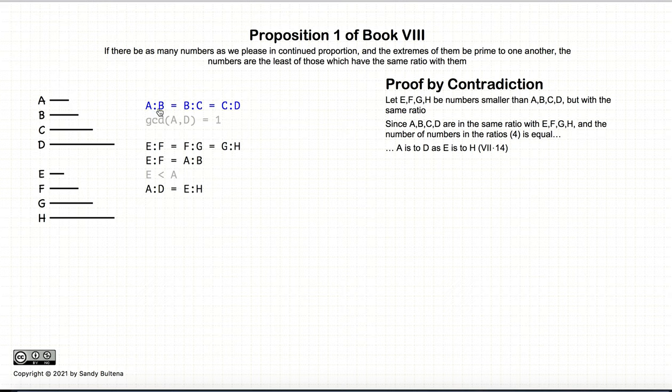So if A, B, C, D are in continuous proportion and E, F, G, H are also in continuous proportion and they are equal to each other, according to Proposition 14 of Book 7, the ratio of A to D will be equal to the ratio of E to H.